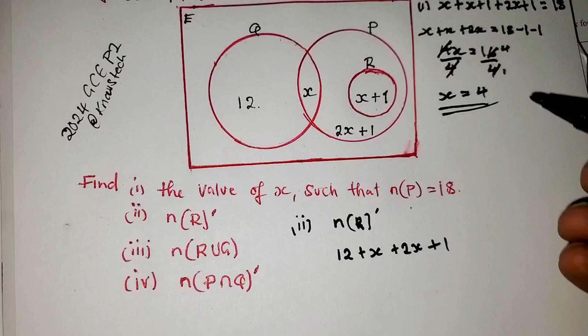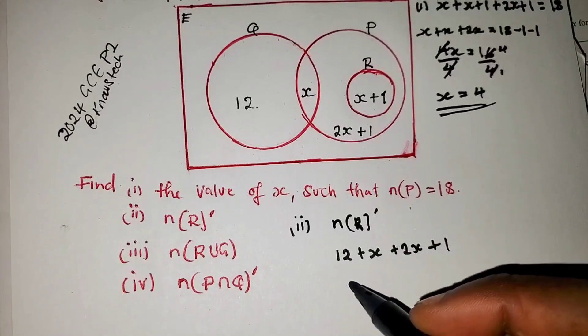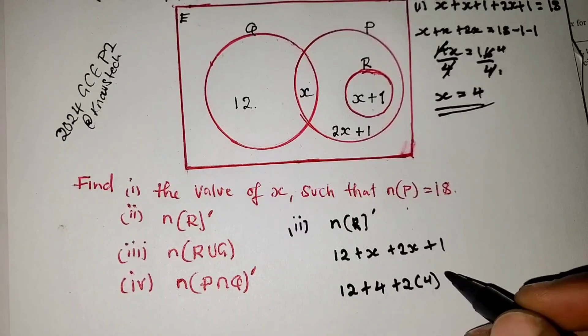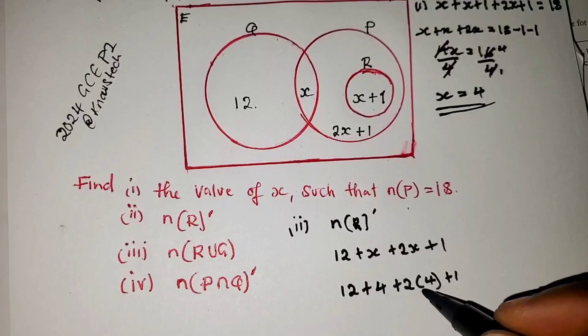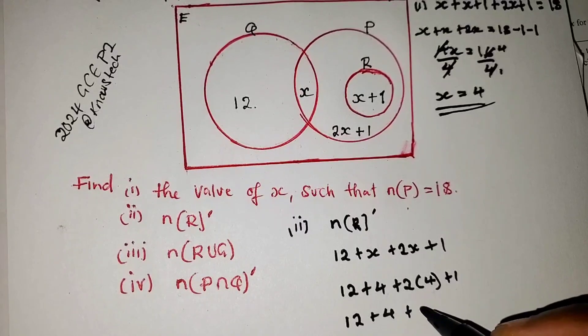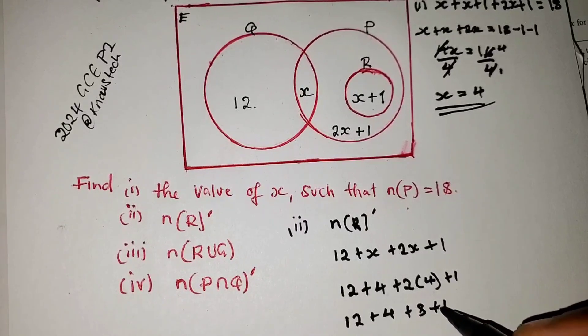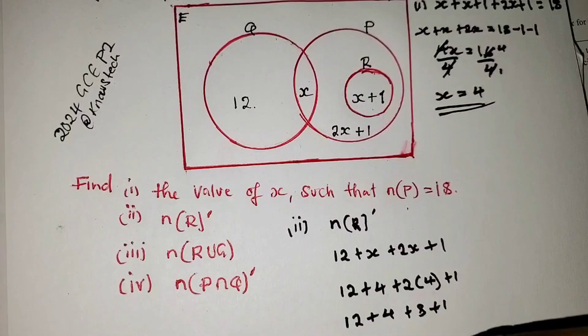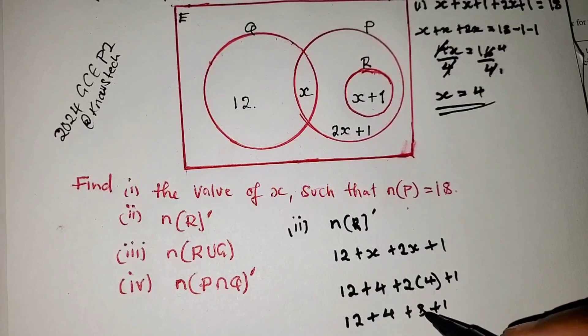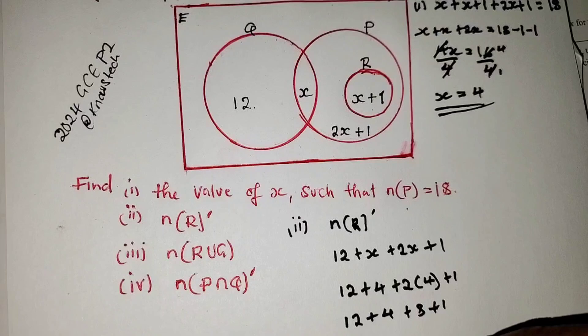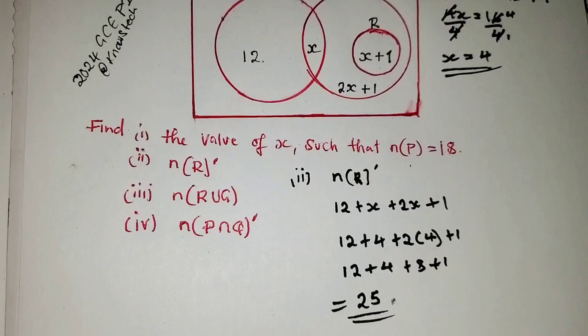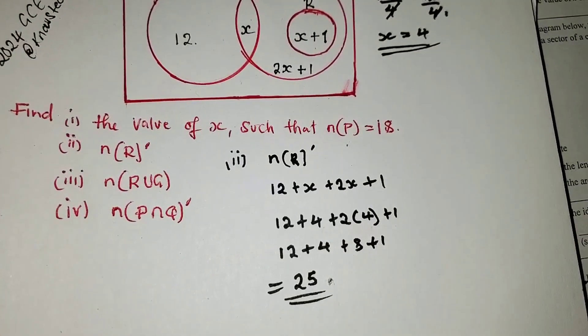Now where there are x's, we have already found the value of x. We can substitute with 4. So 12 plus 4 plus 2 times 4 plus 1. Then we can multiply here. So we can just write 12 plus 4. 2 times 4 is 8 plus 1. So 12 plus 4 is 16. 16 plus 8 is 24. 24 plus 1 is 25. So the number of elements in set R complement is simply 25.